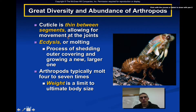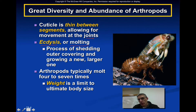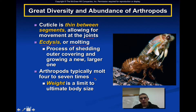In order for arthropods to grow, they must shed their skin — molt their rigid exoskeleton. We give that process a special name: ecdysis. This is simply the process of shedding the outer covering and growing a new, larger one beneath it. On the right, you can see a cicada — an insect arthropod — where the new soft exoskeleton has emerged and the old exoskeleton remains. The arthropod splits along the midline on the back and crawls out. Arthropods typically molt four to seven times throughout their lives, and because weight is an issue, this limits body size.